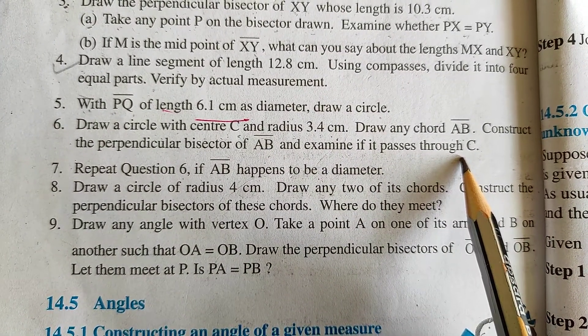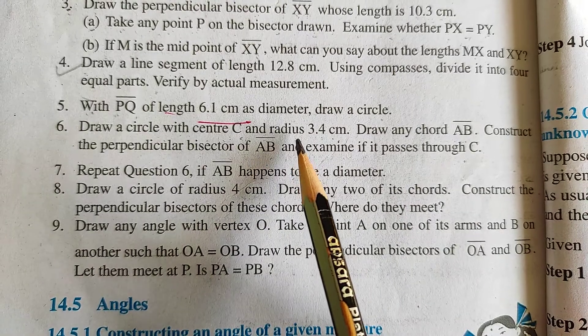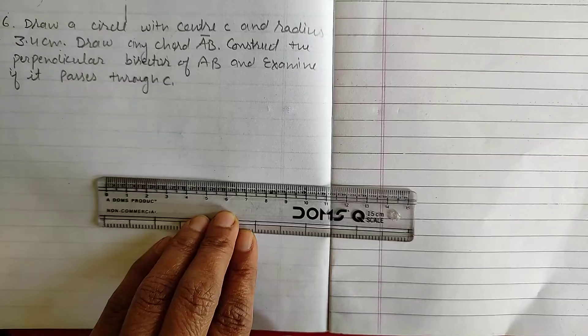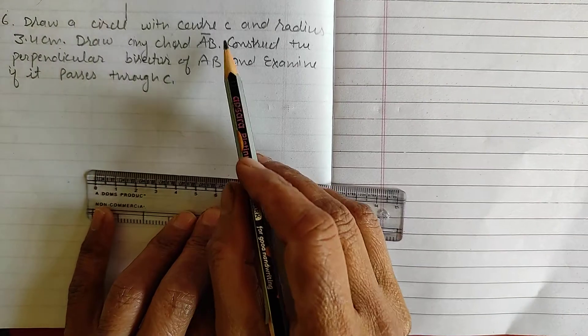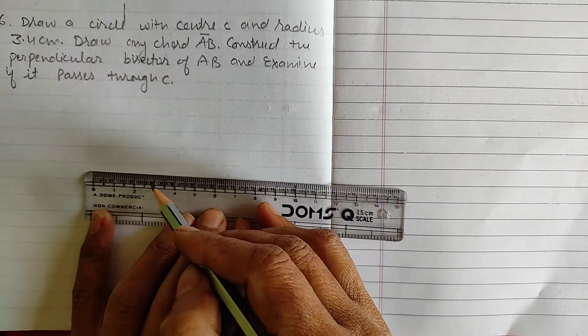So, first of all, you have to draw a circle of radius 3.4 cm. So, student, first of all, you have to draw a radius 3.4 cm.